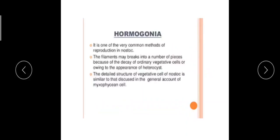I have mentioned about the role and functions of heterocyst. There, I mentioned that heterocyst may act as the point of breakage. So in hormogonia, hormogonias are nothing but small filaments or small trichomes.